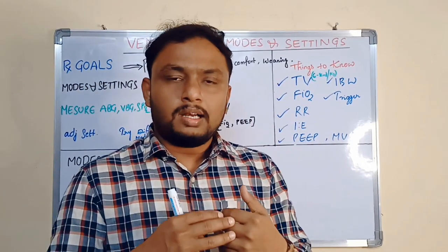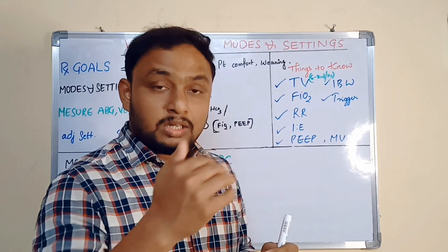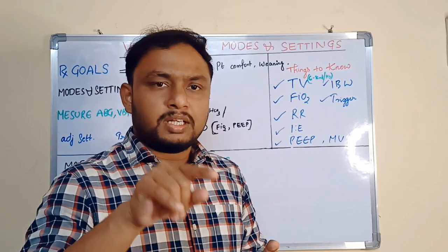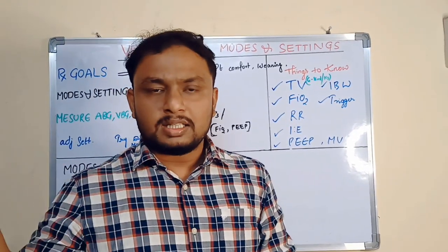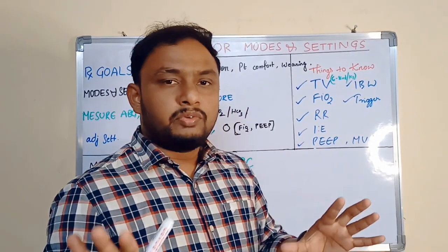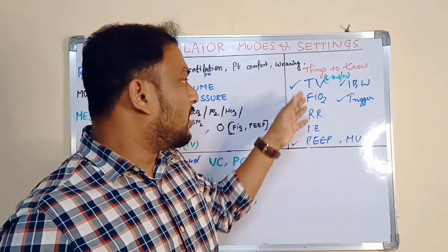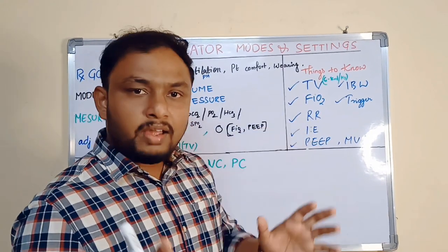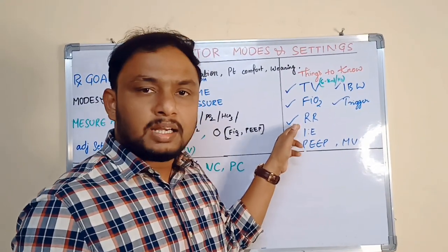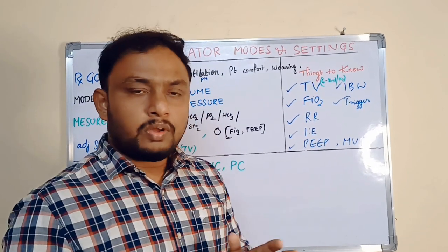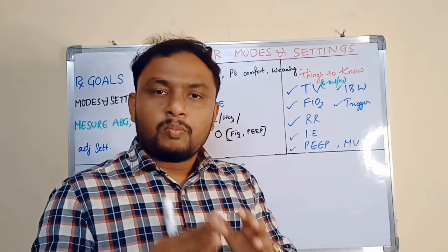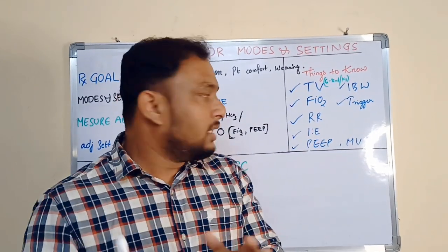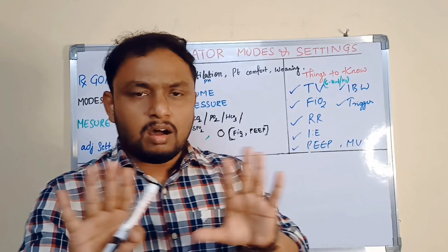Things to know — to set the goals, to reach the goals and to operate the ventilator — there are a lot of terminologies on a ventilator screen. You will see so many letters and numbers. Don't get confused. At least try to remember these five to six terminologies: tidal volume, FiO2, respiratory rate (RR), IE ratio — inspiratory-expiratory ratio, PEEP — positive end-expiratory pressure, minute ventilation, ideal body weight, and trigger. These are the common terminologies you will see on the ventilator screen.